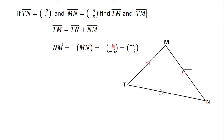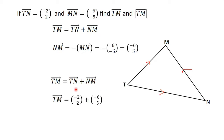MN is 6, negative 5. So if you want NM, you have to negate the x-component and the y-component of MN, and this will give us negative 6, 5. So vector NM is equal to negative 6, 5. Vector TM equals vector TN plus vector NM: TN is negative 2, 2 and NM is negative 6, 5. From the addition of vectors, TM equals negative 2 plus negative 6, which gives us negative 8, then 2 plus 5, which gives us 7. So vector TM is negative 8, 7.